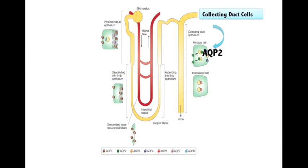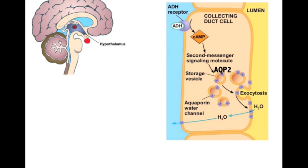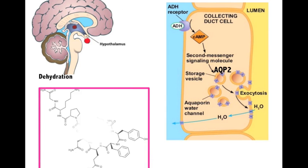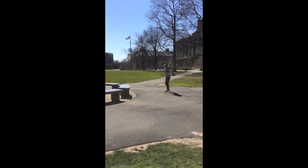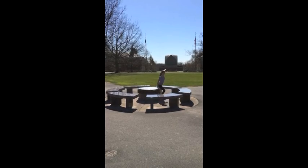Perhaps the most well-known role of the aquaporin is its role in proper kidney function. Aquaporin 2 is critical for the reuptake of water from primary urine in the collecting duct cells of the kidney. When the human body is dehydrated, the hypothalamus secretes a hormone called antidiuretic hormone, or ADH. This hormone binds to V2 receptors on collecting duct cells in the kidney.